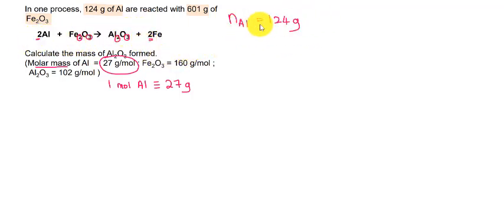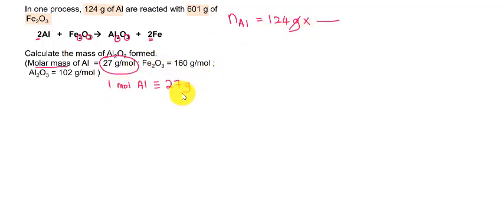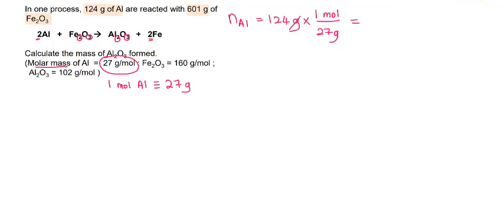So the number of moles of aluminium, using the conversion factor: we have 27 grams = 1 mole. Since we want to cancel out the gram unit, we put 27 grams in the denominator, so 1 mole goes to the numerator. This gives us 4.593 moles of aluminium. Don't be surprised by the large number of moles — if the mass is large, the number of moles will naturally be large too.